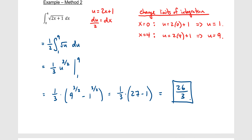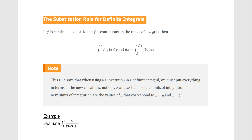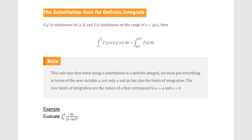The key point with Method 2 is that we use whatever we let u equal to change the bounds, and we never have to go back to x's. This is the preferred method because it works better for more difficult integrals.